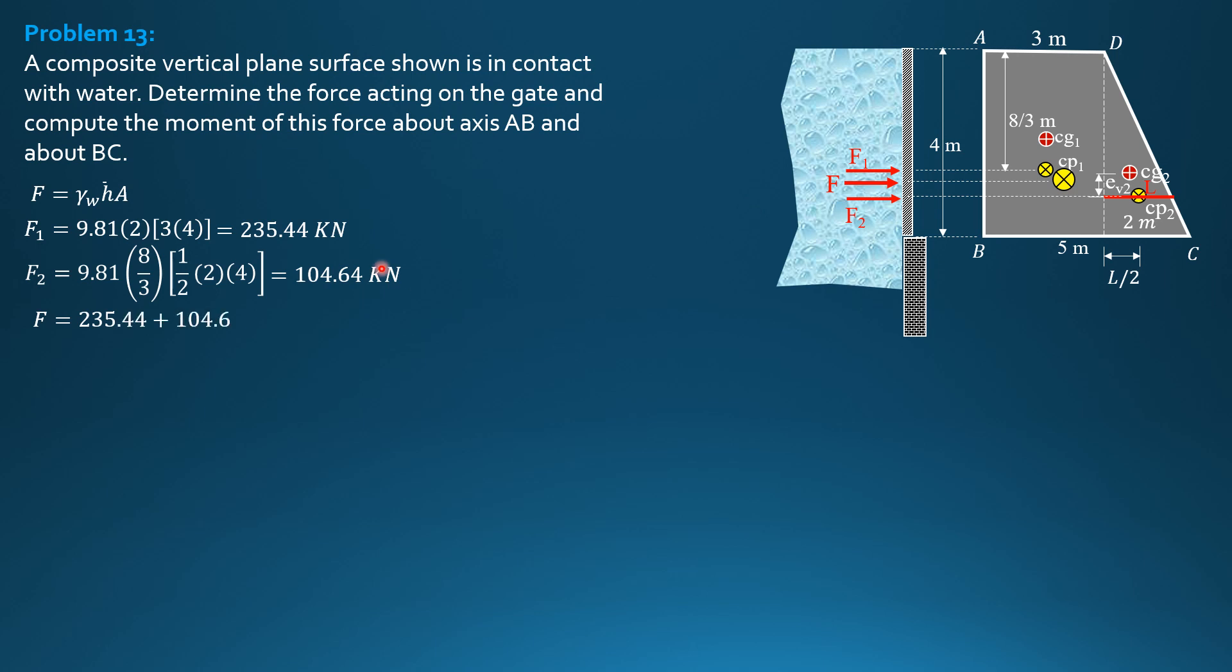Therefore, the total pressure, or F, is equal to 235.44 plus 104.64, so F is 340.1 kilonewtons. Then for moment of the force about AB, we'll first find L by finding EV2 first.